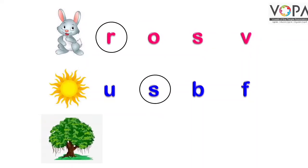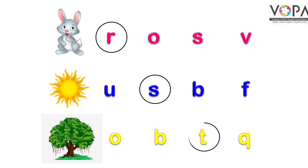अगली picture है Tree की — यानि दरख्त। इसके आगे letters दिये गए हैं: O for Orange, B for Ball, T for Tree, और Q for Queen। हमें पता है कि Tree इस word की शुरूआत T से होती है, इसलिए हम लोग यहाँ T को encircle करेंगे।